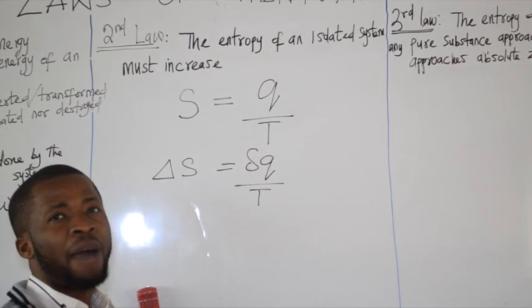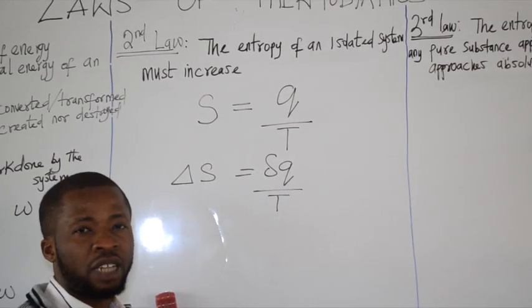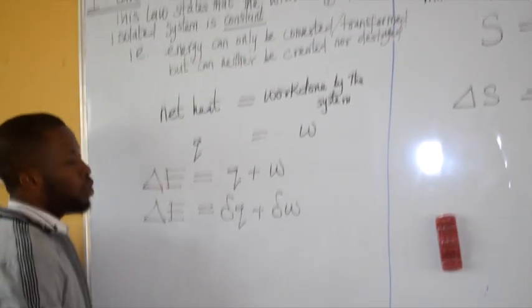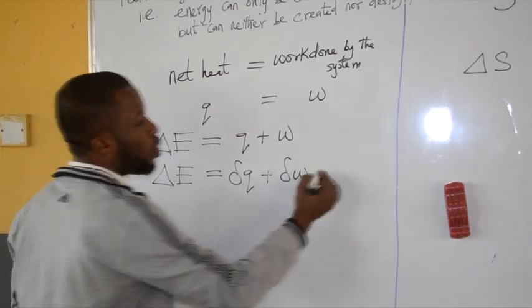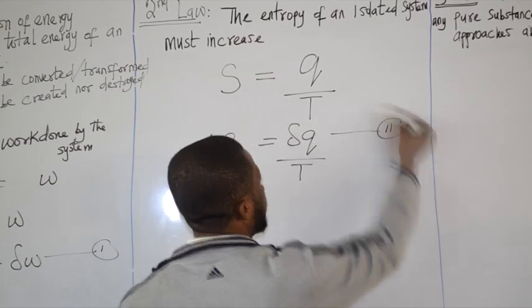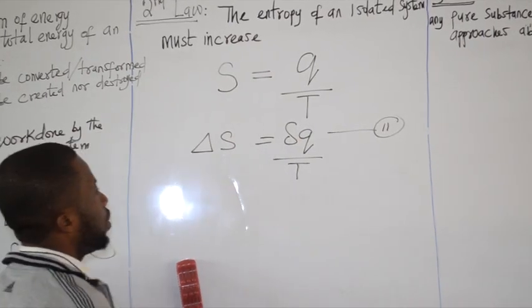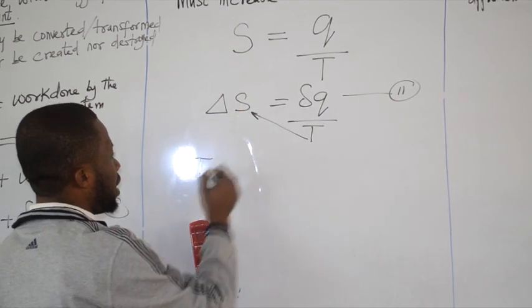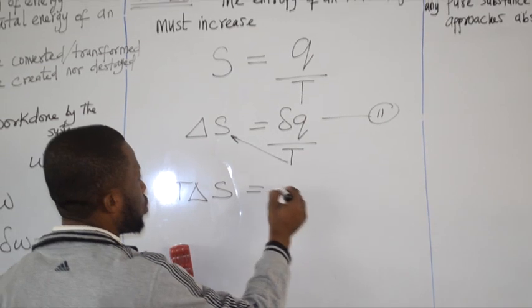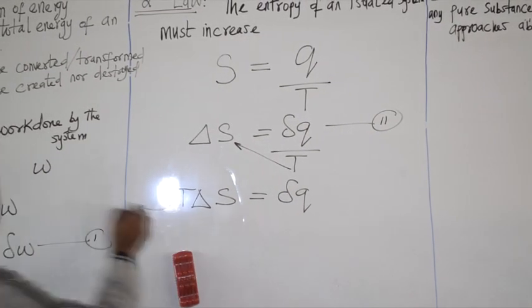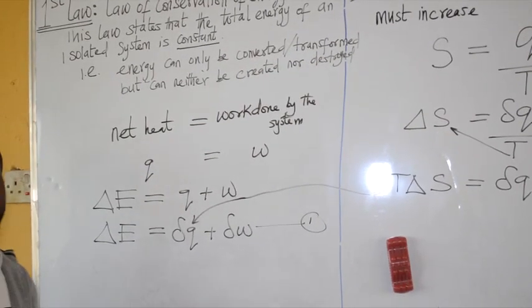I can combine the first and second law mathematically to get a new equation. From my first law, where internal energy equals Q plus W, I can call this equation 1 and this equation 2. So if I cross multiply, I will have that T delta S is equal to partial derivative of Q, meaning that I can actually replace Q with T delta S.